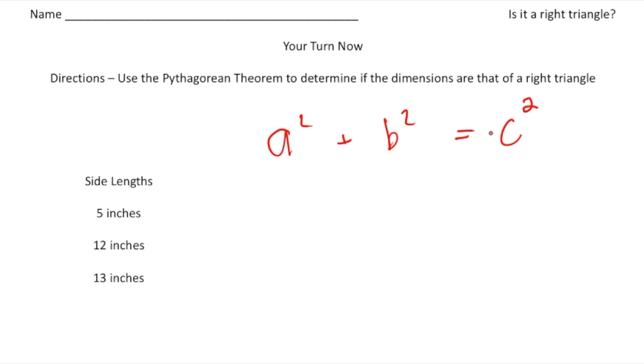So again, I know the longest side has to be the c side, right? So 13 is going to be the c, which I'll call 12 the b, and then 5 will be the a. So 5 squared plus 12 squared has to equal 13 squared.